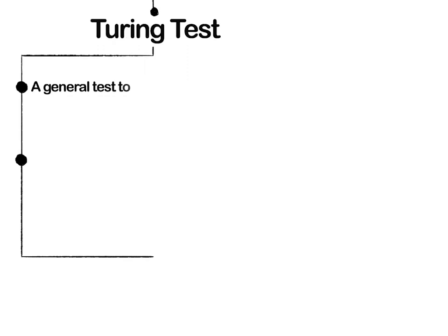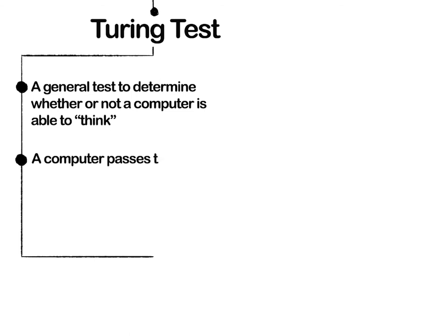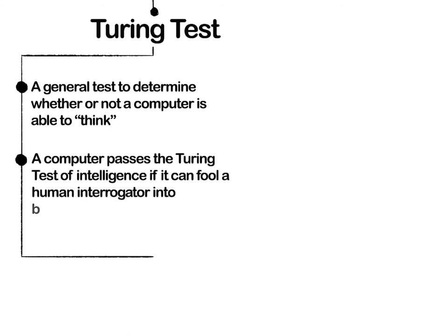The Turing Test is a general test to determine whether or not a computer is able to think like a human. A computer passes the test of intelligence if it can fool a human interrogator into believing its results were human-made.